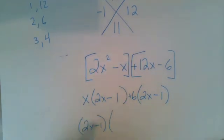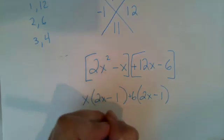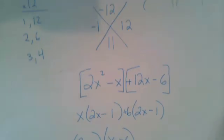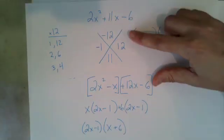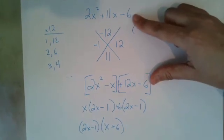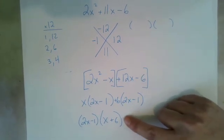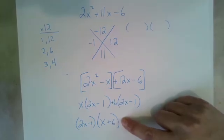And what's left in this term when I factor out that one? An x. And what's left in this term when I factor out that one? A plus 6. And now I have completed my factoring. 2x squared plus 11x minus 6 factors into 2x minus 1 times x plus 6.